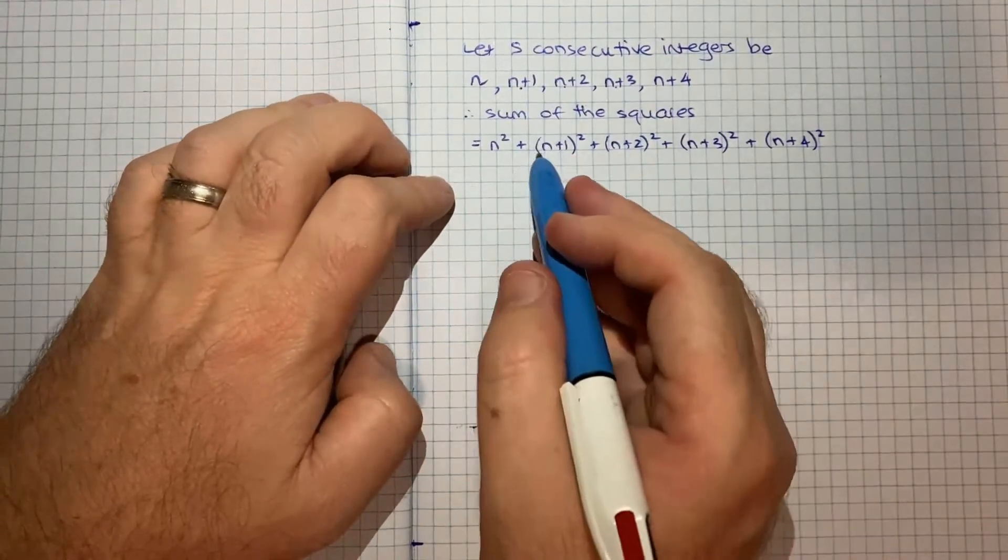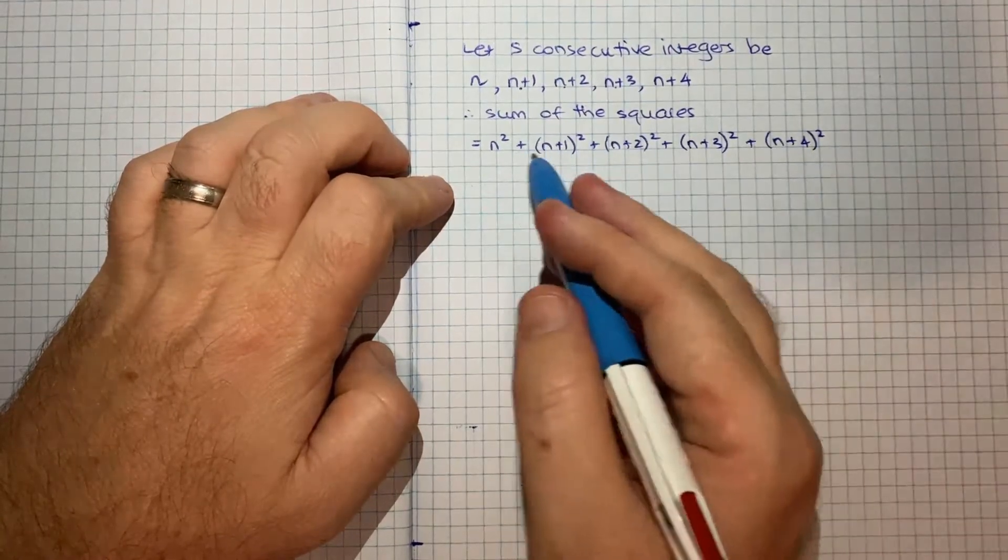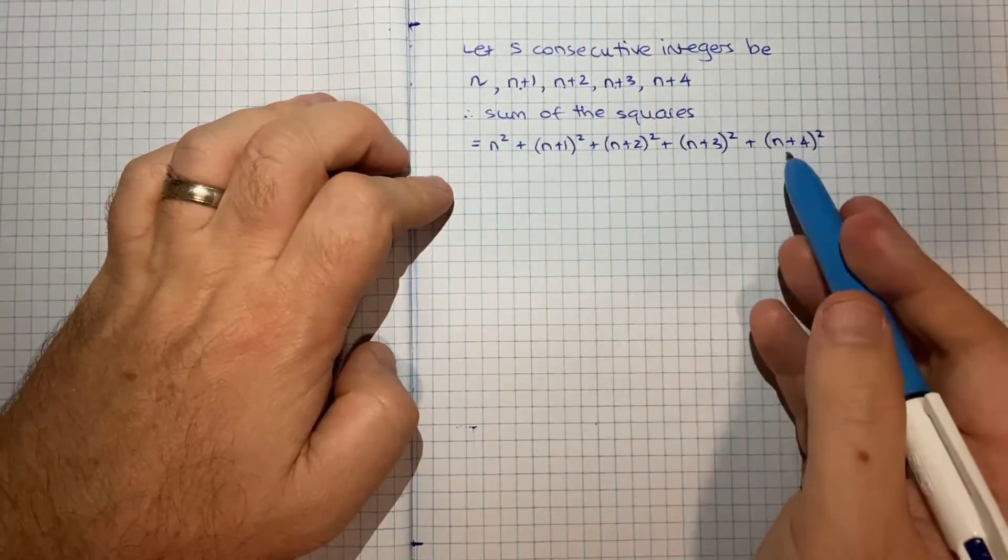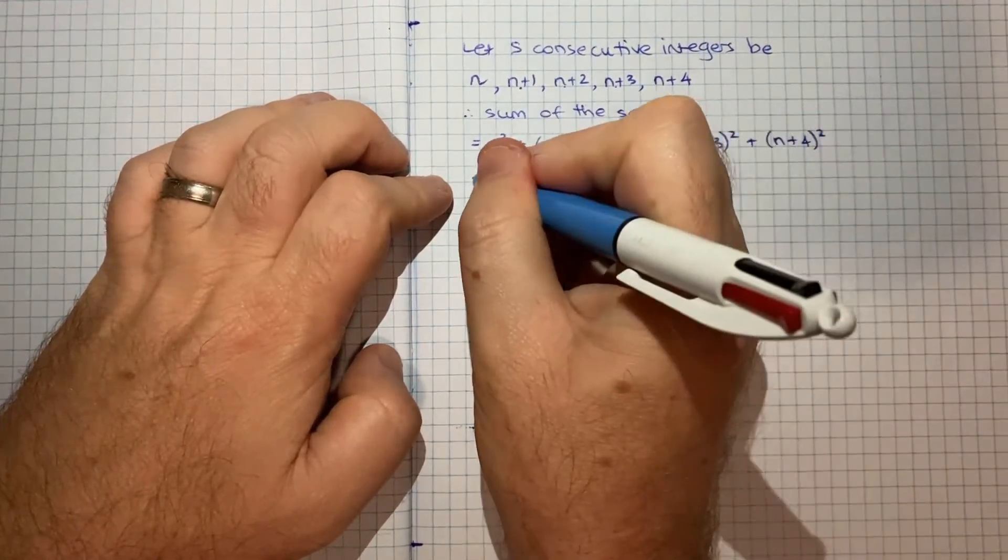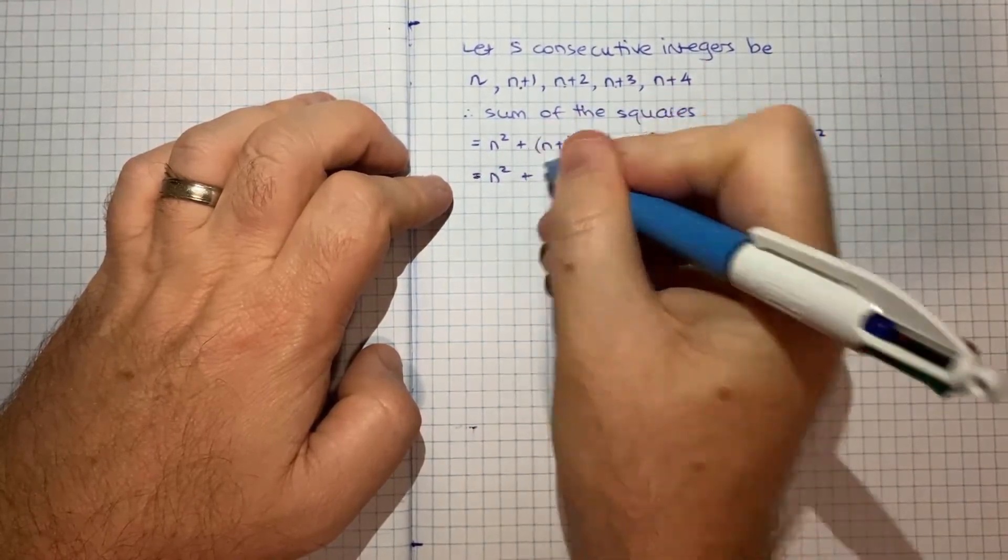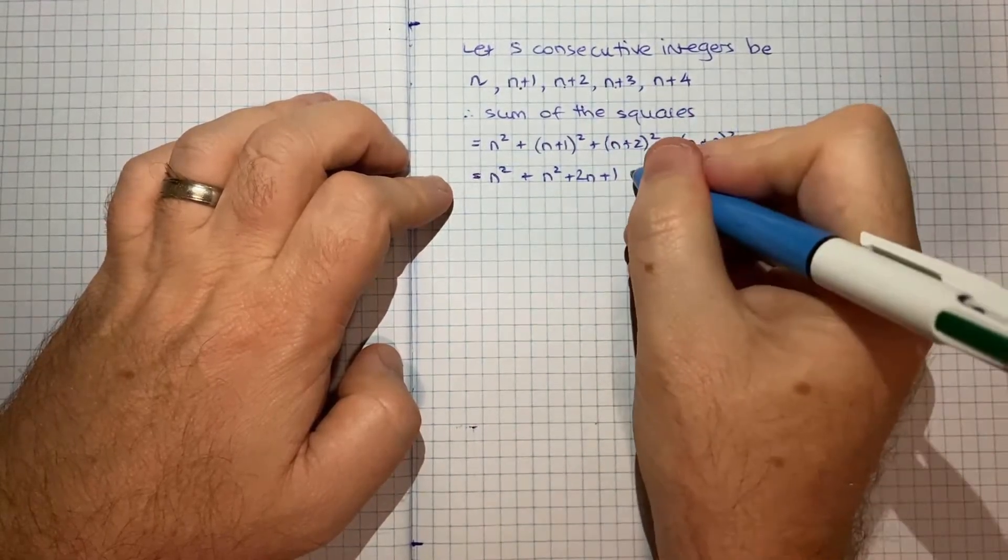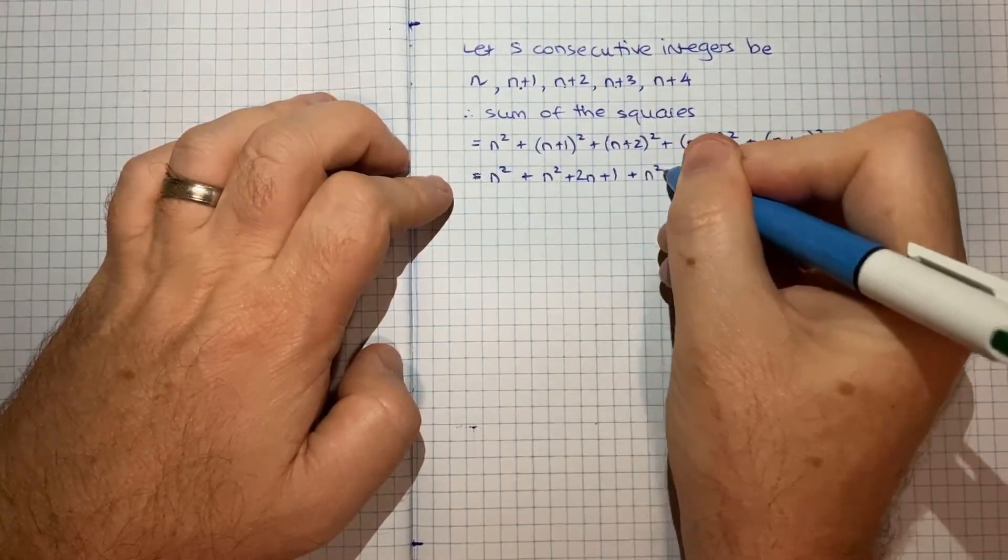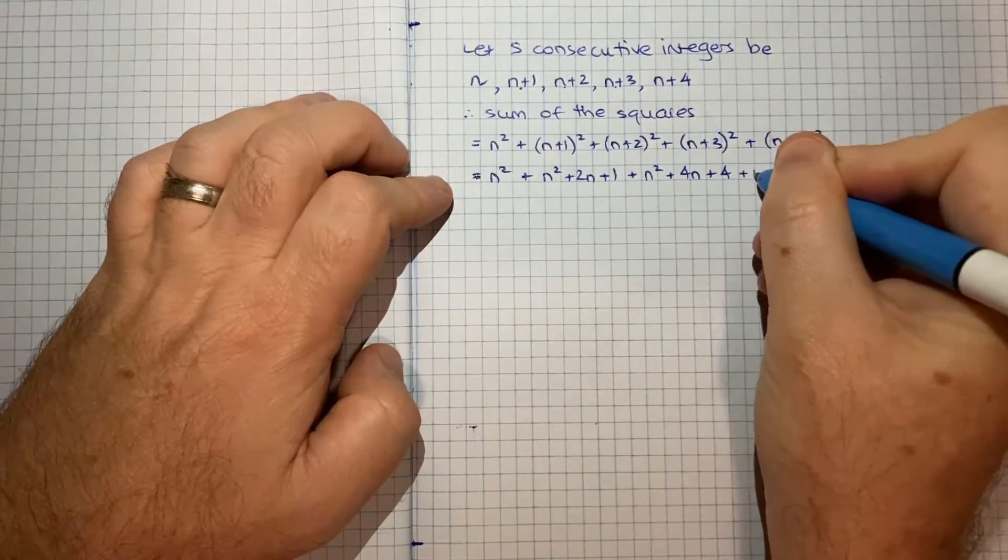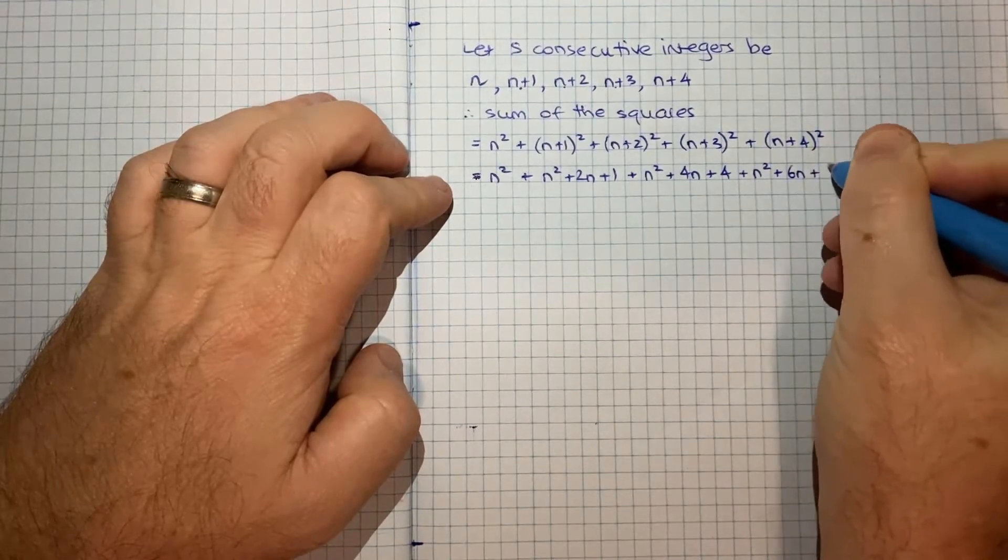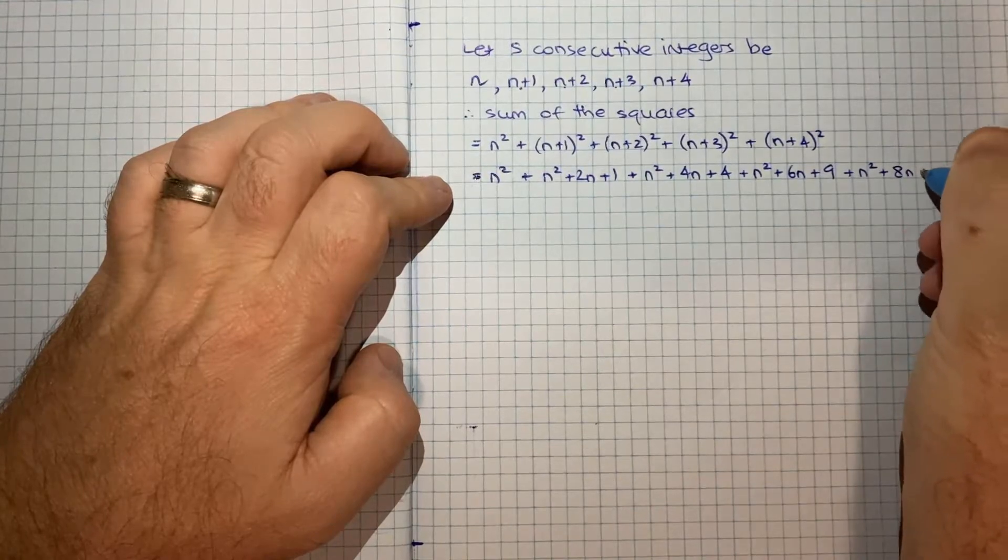And because we're dealing with just squares, this is easy enough to expand. And then hopefully when we expand it, all of the resulting items are divisible by five so we can factor out five. So let's see if that's what happens. We'll have n squared plus first one squared plus twice the product plus last one squared, repeating this pattern for each binomial.